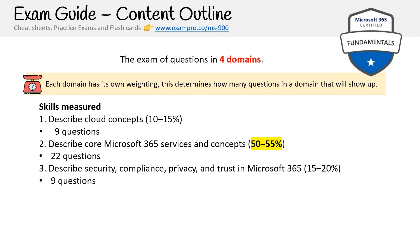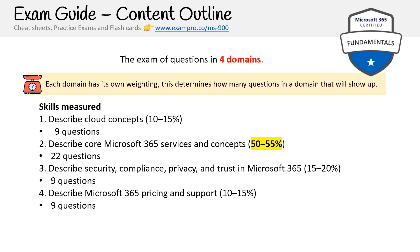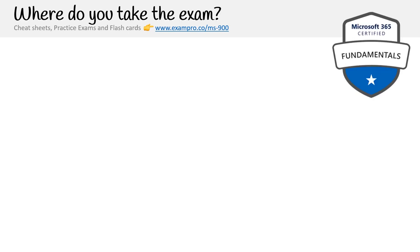Domain three, Security, Compliance, Privacy and Trust in Microsoft 365, accounts for around 15 to 20% of the questions. Domain four, Microsoft 365 Pricing and Support, is roughly 10 to 15%. To emphasize: for domain two, you will need to know a wide range of core Microsoft 365 services, and also know them in depth.